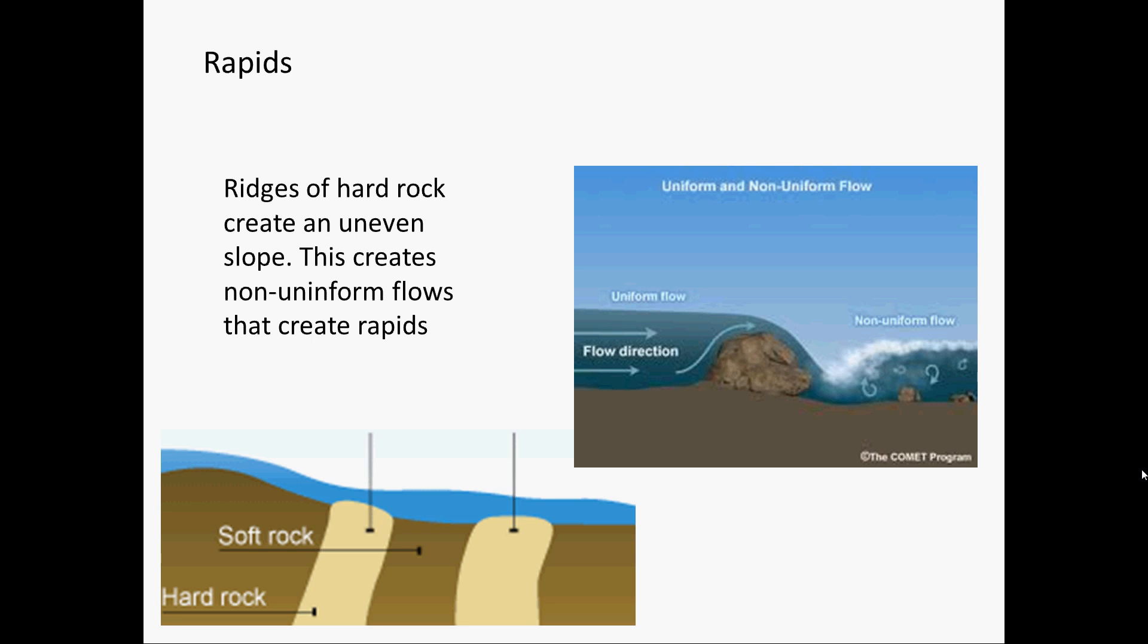Rapids are like a series of small waterfalls. They form when vertical layers of hard rock jut out just above layers of soft rock between them forming an uneven surface. This makes the water flow in a non-uniform flow that creates rapids.